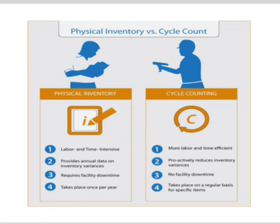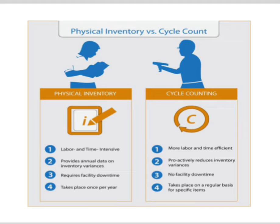Physical counting is both labor intensive and time intensive — more time has to be invested. It provides annual data on inventory variances, since it is difficult to check on a daily or weekly basis, so reports are presented on an annual basis only. This leads to inventory shortages and deterioration. It also requires facility downtime, and it takes place only once a year.